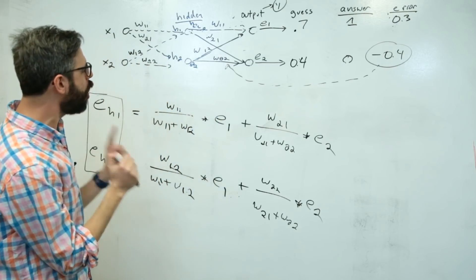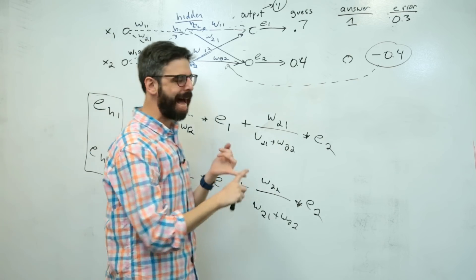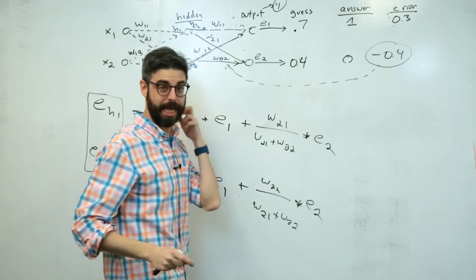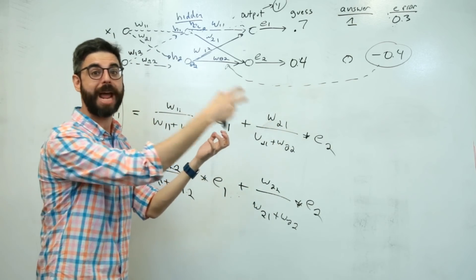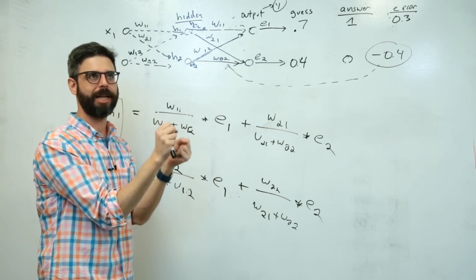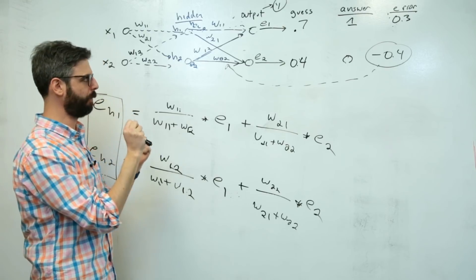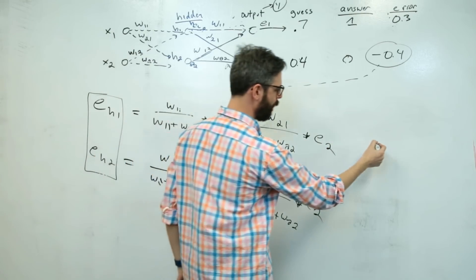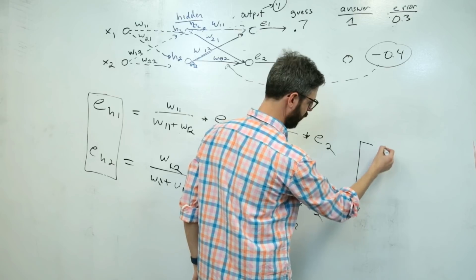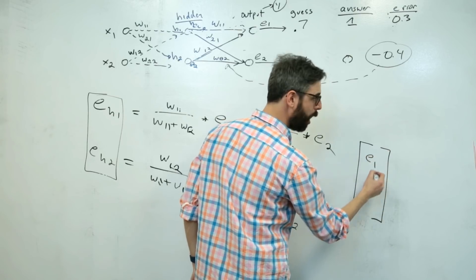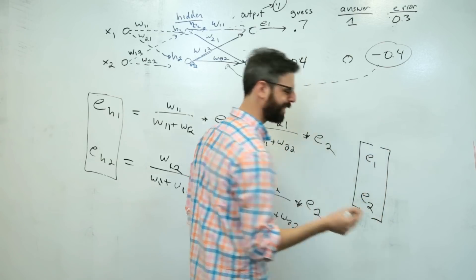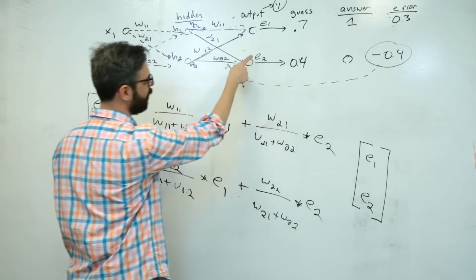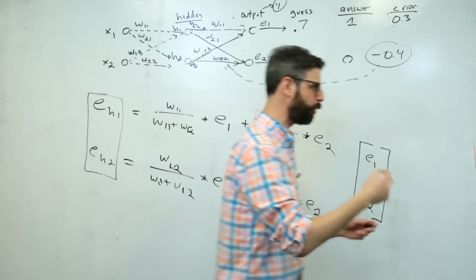What I want to do in the code now is actually add this training function where I send in input data to the network with a known answer, and have the training function calculate the error. Basically, I want to calculate this vector - e1, e2 - a one-column matrix. That's what I want to calculate, and that's going to be the easy part, so let's do that first.